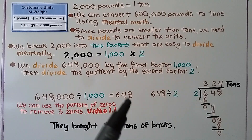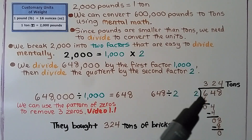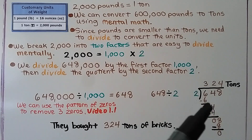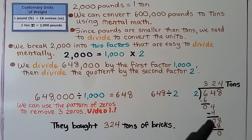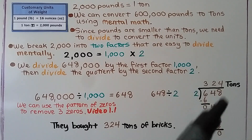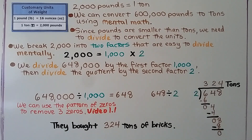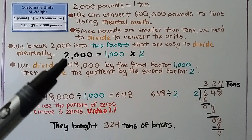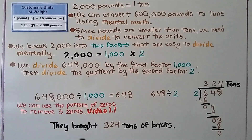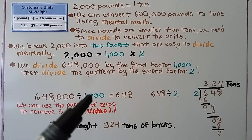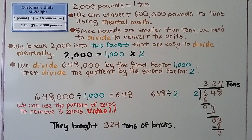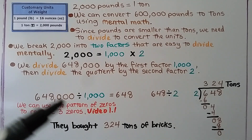Now we divide six hundred forty-eight by the second factor, two, using long division. Two goes into six three times; bring down the four, two goes in two times; bring down the eight, two goes in four times. We find they bought three hundred twenty-four tons of bricks. We divided twice — first by one thousand using the pattern of zeros, then by two — to break up dividing by two thousand.